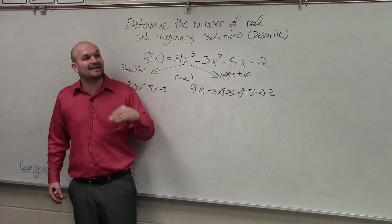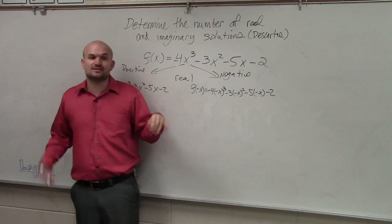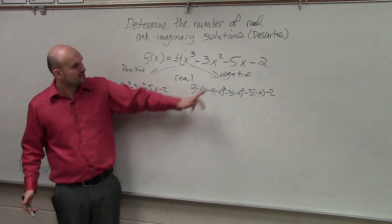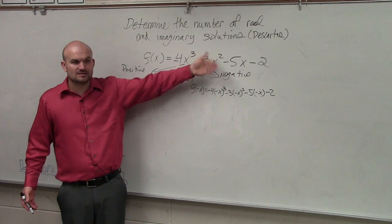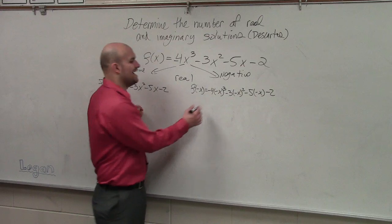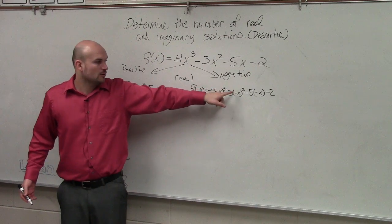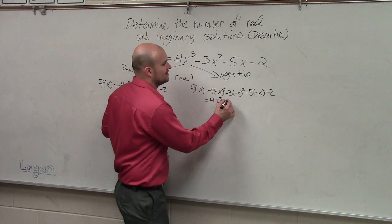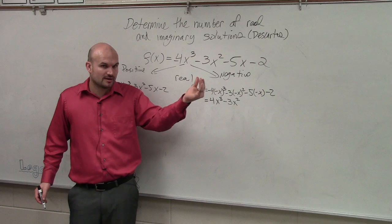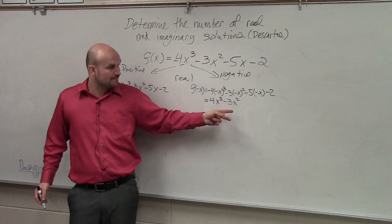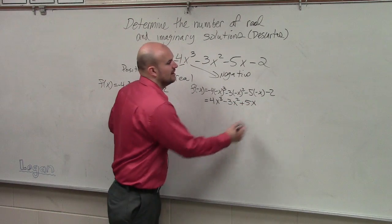Now I have to simplify that. Whenever you take a negative number or term and raise it to an odd power, it remains negative. Whenever you take a negative number and raise it to an even power, it becomes positive. So negative x cubed is still negative x cubed — negative x times negative x times negative x is negative x cubed — times negative 4 turns into positive 4x cubed. Negative x squared becomes positive x squared, and positive x squared times negative 3 is negative 3x squared. Negative x times negative 5 is positive 5x, and then we have negative 2.